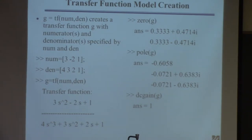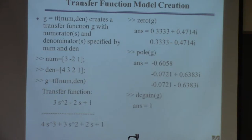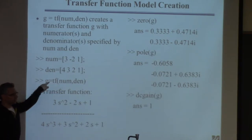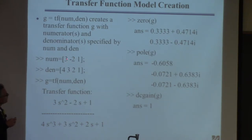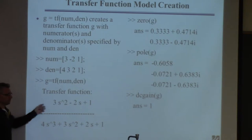This function creates a transfer function. You specify a numerator polynomial and a denominator polynomial and issue the 'tf' command. It creates a transfer function from those two polynomials. The coefficients are specified in descending order of their powers — so for example, S squared, S, S to the zero in the numerator, and S cubed, S squared, S one in the denominator. You can create a transfer function this way.